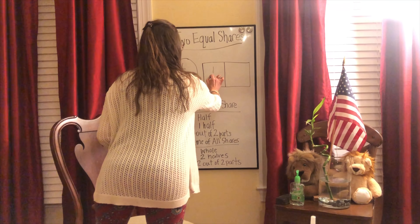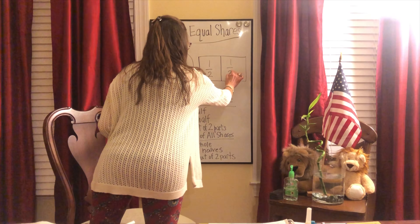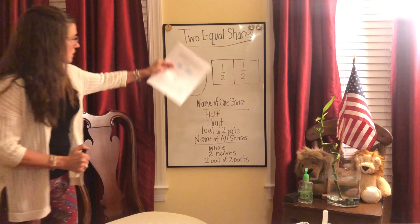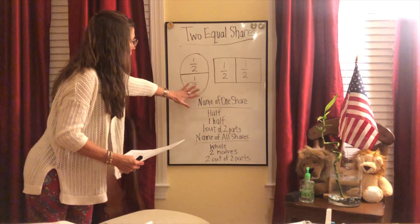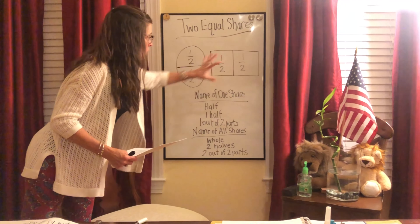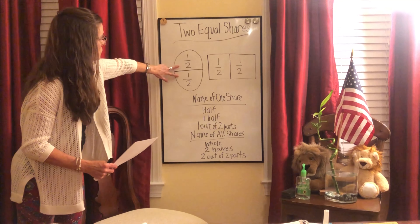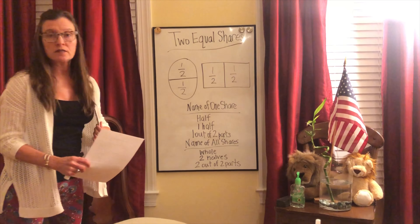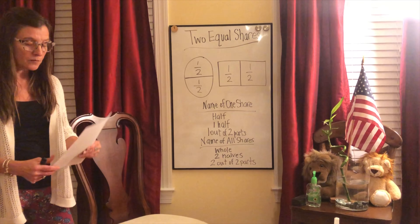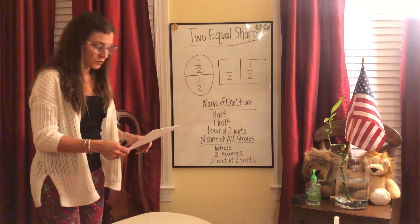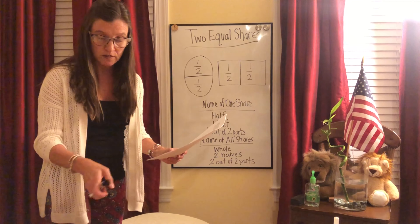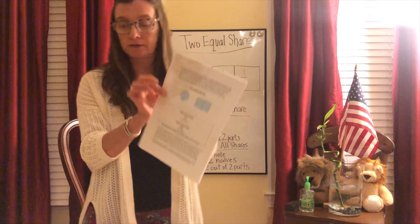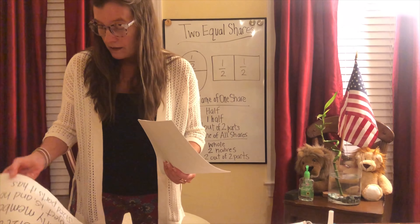Same thing over here — this side of the rectangle is one of two parts, one of two parts, equal shares. Now if we're going to talk about naming all of the shares, we can say this is the whole pancake, or the whole rectangle. Or we can say these are two halves, and we can say this is two out of two parts. That's something you'll see as we go through Unit 8, and there's a chart that was sent to your parents on the math lesson plans.